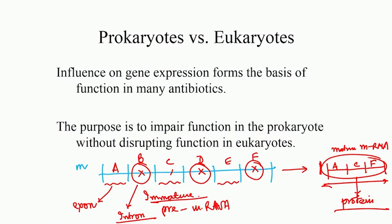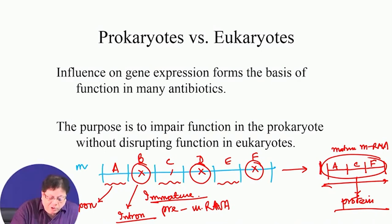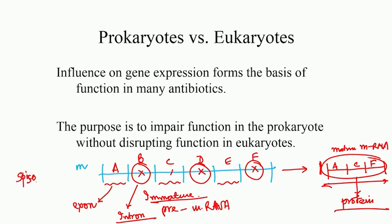The question is: who does this type of splicing? This is nothing but splicing — you are splicing out the non-coding segments and joining the remaining exons. This is done by an enzyme-like molecule called the spliceosome, which removes the introns and joins the exons together.